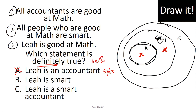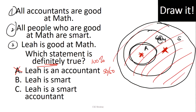Leah is smart — whether she's inside the accountants circle or just in the good-at-math circle, she's always inside the big smart circle. So this is 100% true. 'Leah is a smart accountant' — she is definitely smart, but not necessarily an accountant, so that's also not definitely true. The correct answer is B: Leah is smart.